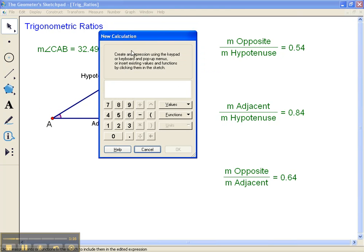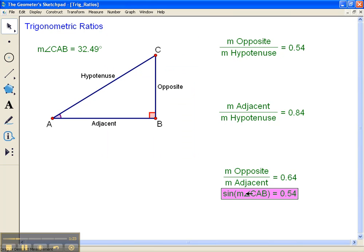So I'm going to come up here, pull up the calculator, I'm going to choose the sine of the angle measurement that's CAB and I can see that this is the exact same thing as opposite over hypotenuse. Sine ratio is the same thing as opposite over hypotenuse.